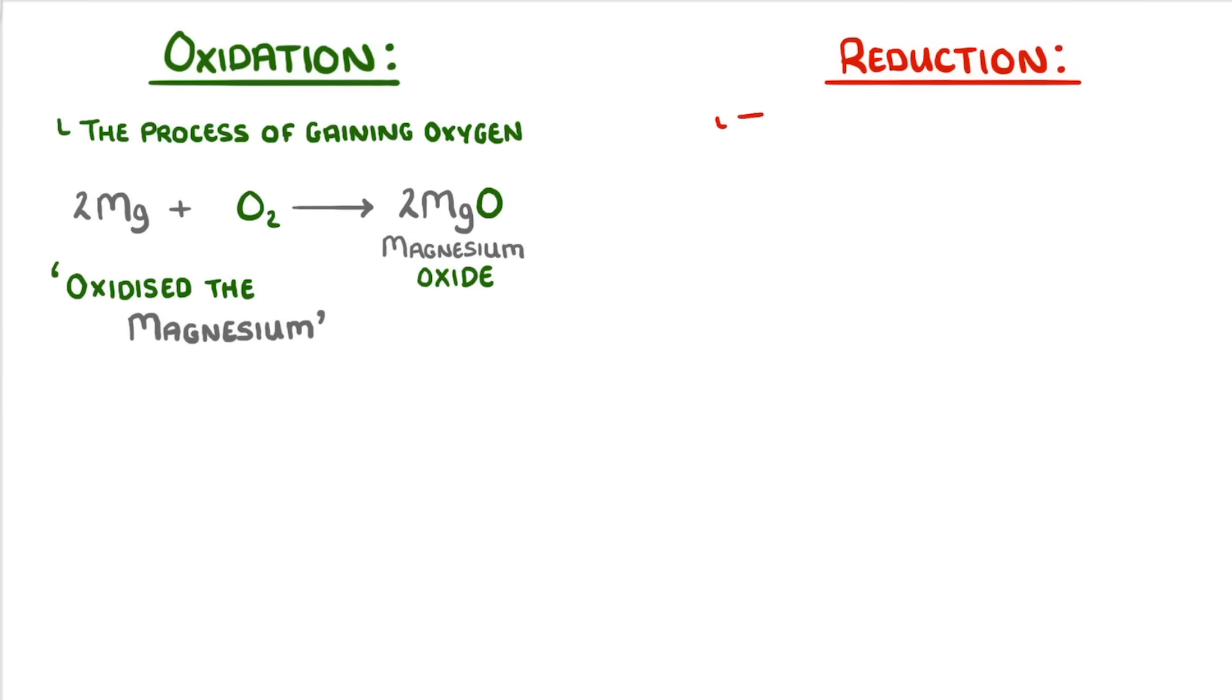Meanwhile, reduction is the loss of oxygen. So if we broke our magnesium oxide back into magnesium and oxygen, we would have reduced the magnesium.